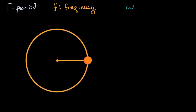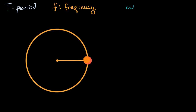If you had a period of two seconds, it would go half the speed: one second, two seconds, three seconds, four seconds, five seconds, six seconds. And if you went the other way — if you had a period of half a second — then it would be one second, two seconds. So your period would be half a second; it would take you half a second to complete a cycle.